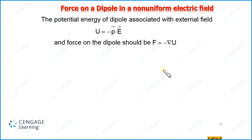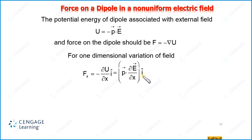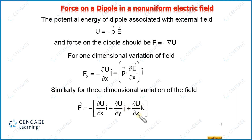If the field is one-dimensional — suppose the electric field is restricted along the x direction — we can write Fx equal to negative dU/dx. Since U = −P·E, the two negatives give a positive, so the force equals P·(dE/dx) in the i-direction. For three-dimensional variation of the field, we write: F vector = −(∂U/∂x) i-cap − (∂U/∂y) j-cap − (∂U/∂z) k-cap.